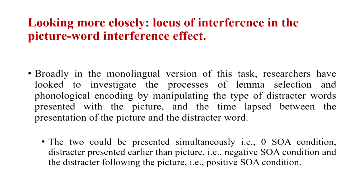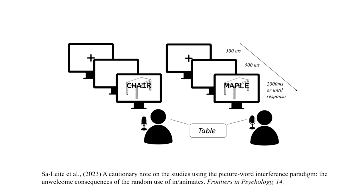Let's look more closely at the locus of interference in these picture word interference studies. In the monolingual version of the task, researchers investigated the various processes of lemma selection and phonological encoding by manipulating the type of distractor words presented with the picture — using semantic distractors, phonological distractors, neighborhood distractors, and so on. They also varied the stimulus onset asynchrony (SOA) between picture and distractor: both presented simultaneously (SOA 0), the distractor presented earlier (negative SOA), or the distractor presented after the picture (positive SOA).